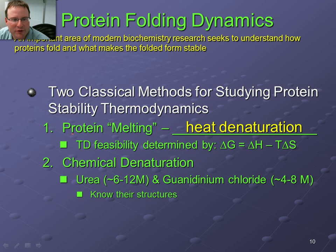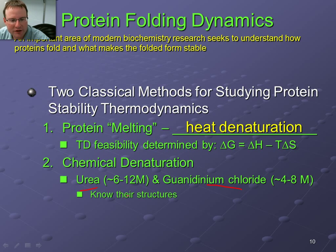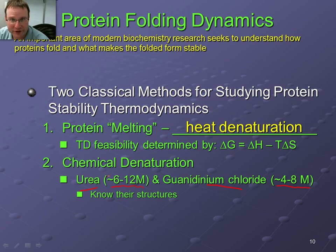The second related method for studying protein stability uses chemical methods instead of heat to denature biomolecules. The two chemicals commonly used are urea and guanidinium chloride, used at very high concentrations — 6 to 12 molar or 4 to 8 molar — far higher than the micromolar or millimolar concentrations typical for protein solutions. We're using concentrations that just beat the living daylights out of proteins.